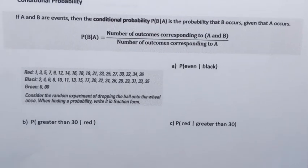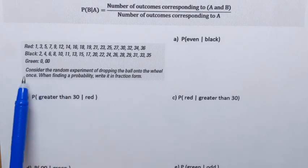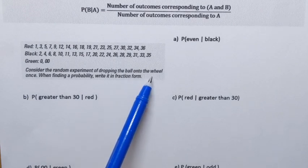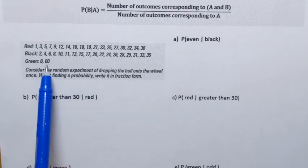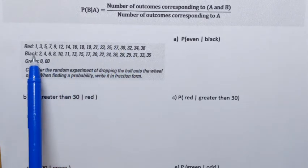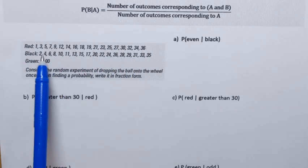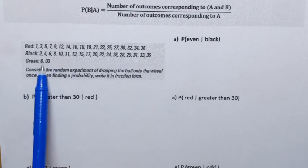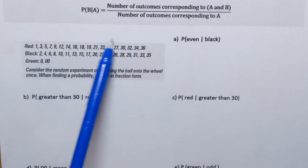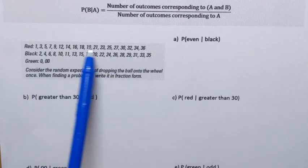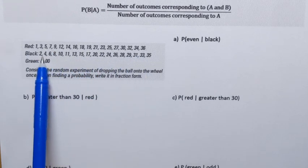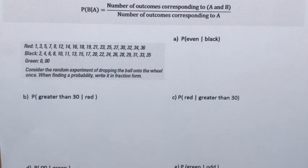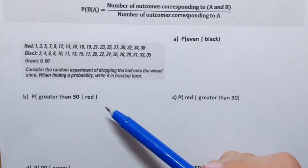In this example we consider the random experiment of dropping a ball onto a spinning wheel. That spinning wheel contains red numbers, black numbers, and two green slots: zero and double zero. The numbers go up to 36, some are red and some are black. It's one of those spinning wheels you find at a casino.